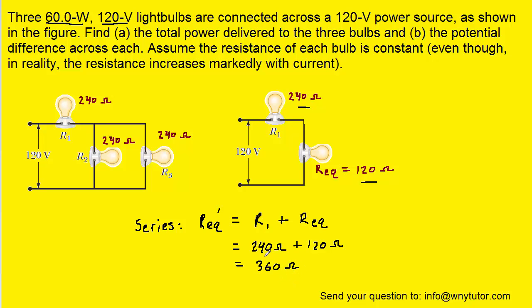So this resistance represents the total resistance of the entire circuit, and therefore we can use it to calculate the total power delivered to the three bulbs. And to do that we go back to the same power equation that we used earlier, remembering that the potential difference was 120 volts and that the total resistance was just determined as 360. We can plug in, and when we do so we get approximately 40 watts will be the total power delivered to the three bulbs, so part A is solved.